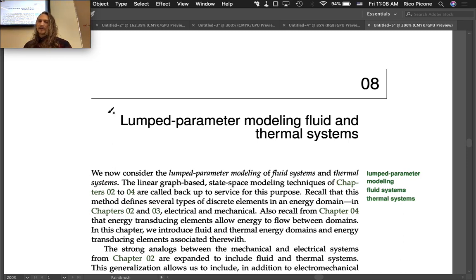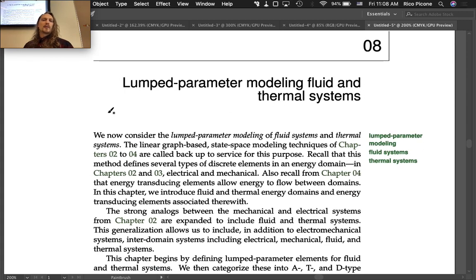We now consider the lumped parameter modeling of fluid systems and thermal systems. The linear graph-based state space modeling techniques of Chapters 2 to 4 are called back up to service for this purpose. Recall that this method defines several types of discrete elements in an energy domain. In Chapters 2 and 3, we defined electrical and mechanical energy domains.